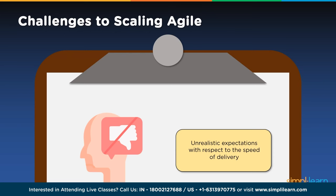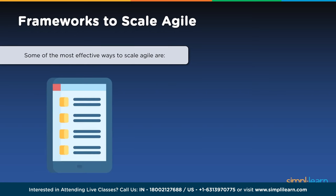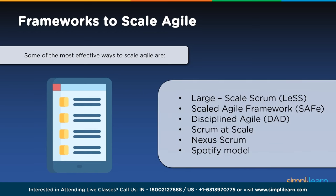Today the concept of 'time to market' has been replaced by 'time to benefits' — how quickly the value of a product or service introduced to market is realized by users. The main frameworks for scaling agile include Large Scale Scrum (LeSS), Scaled Agile Framework (SAFe), Disciplined Agile (DA), Scrum at Scale, Nexus Scrum, and the Spotify model. LeSS is a way of scaling agile and scrum to large product development groups, used since 2005 in software and hardware products in industries such as banking and telecom. SAFe is a set of organizational and workflow patterns intended to guide enterprises in scaling lean and agile practices.